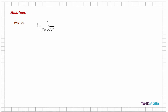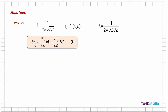We're given that the resonant frequency is equal to 1 over 2π√(LC), meaning the resonant frequency is a function of inductance L and capacitance C. We can rewrite this as 1 over 2π√L × √C. The overall approximate change in frequency is approximately equal to the rate of change of frequency with respect to inductance times the small change in inductance, plus the rate of change of frequency with respect to capacitance times the small change in capacitance.